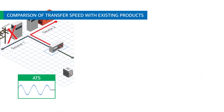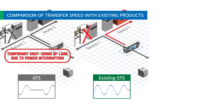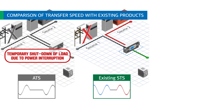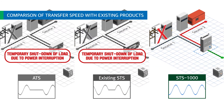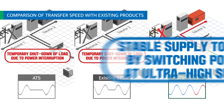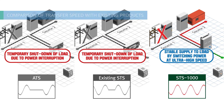ATS and existing STS will temporarily shut down the load due to power interruption. STS-1000 transfers at ultra-fast 500 microseconds or less, supplying stable power to the load even in major equipment controlled by magnetic contactor.